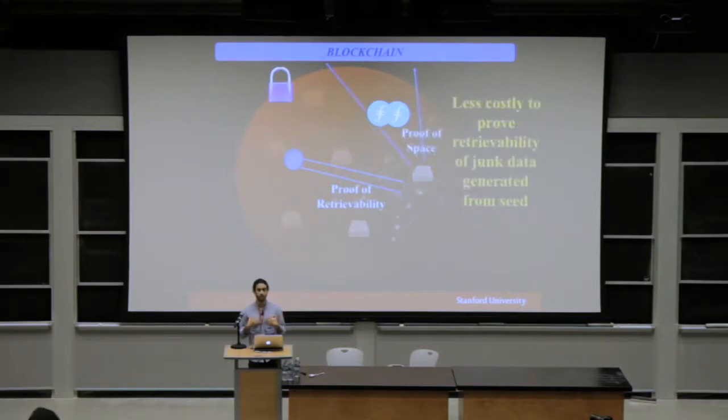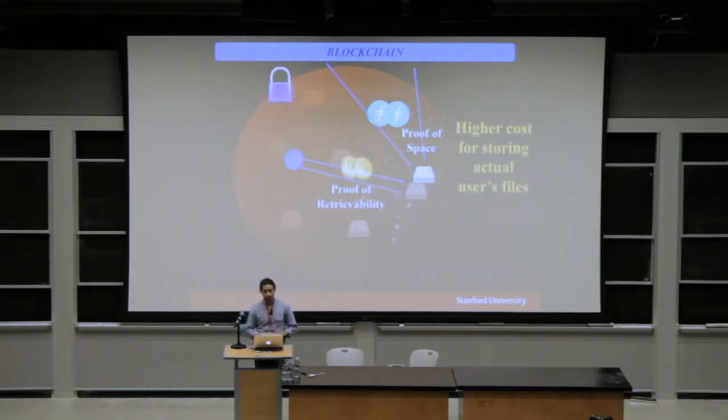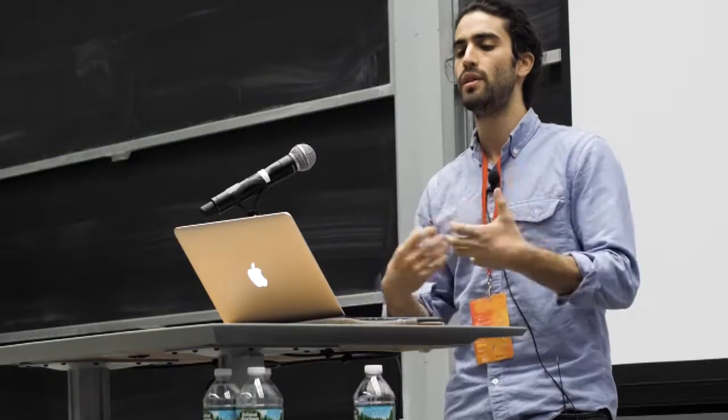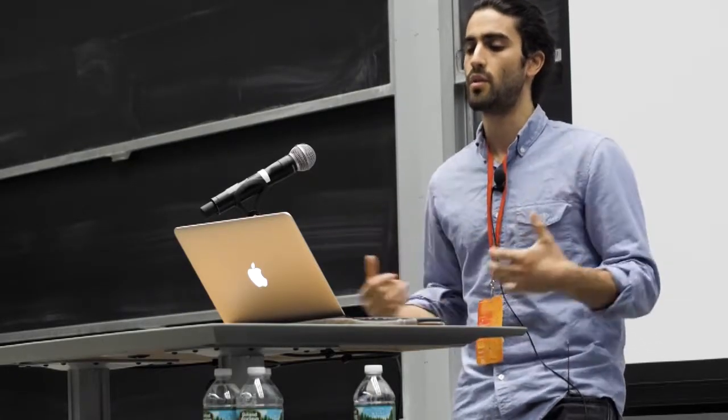It would be much cheaper, it would be less costly if I don't actually store anybody's data. I use my disk space to do proofs of space for the network, and then if the blockchain wants to see that I'm able to retrieve some data, then I'll just store junk data that I can generate easily, and I don't need a lot of storage to store. So it's really important that we can double use the same storage that we're using for storing useful things, storing other people's files, to also be able to prove that we're using storage to the blockchain.